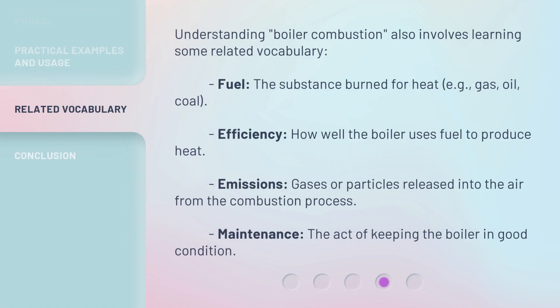Understanding boiler combustion also involves learning some related vocabulary. Fuel: the substance burned for heat — examples include gas, oil, and coal. Efficiency: how well the boiler uses fuel to produce heat. Emissions: gases or particles released into the air from the combustion process. Maintenance: the act of keeping the boiler in good condition.